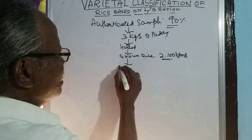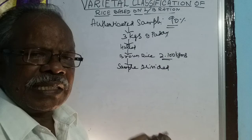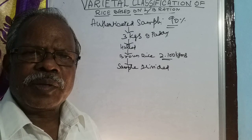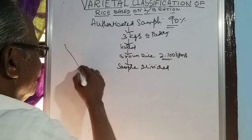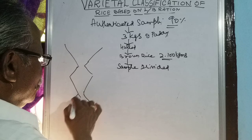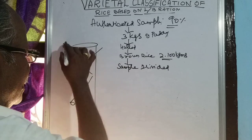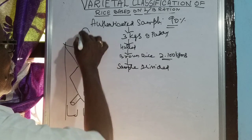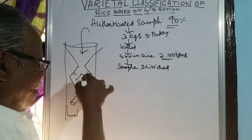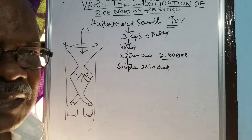The brown rice is put into the sample divider. The sample divider is a physical device which divides the sample equally into two halves based on gravitational force. A funnel-like structure leads to a conical structure, with two spouts and two pans below. Many slots allow the sample to be divided equally into two by gravitational force.